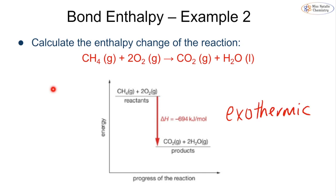We can draw this on a reaction profile. Our reactants should be at a higher energy than our products. The main difference from the previous diagram is that we write in the actual reactants and products rather than just the words 'reactants' and 'products'.